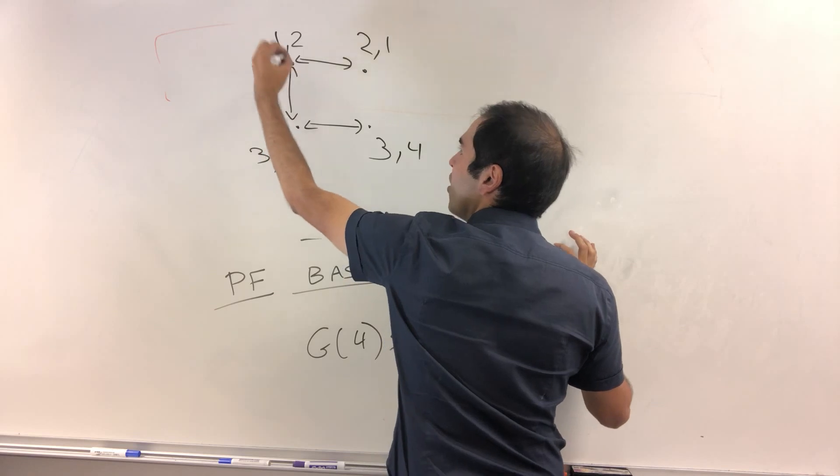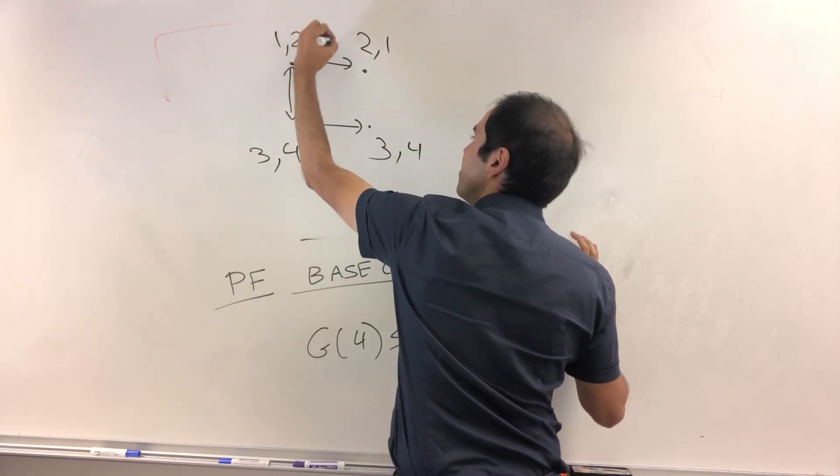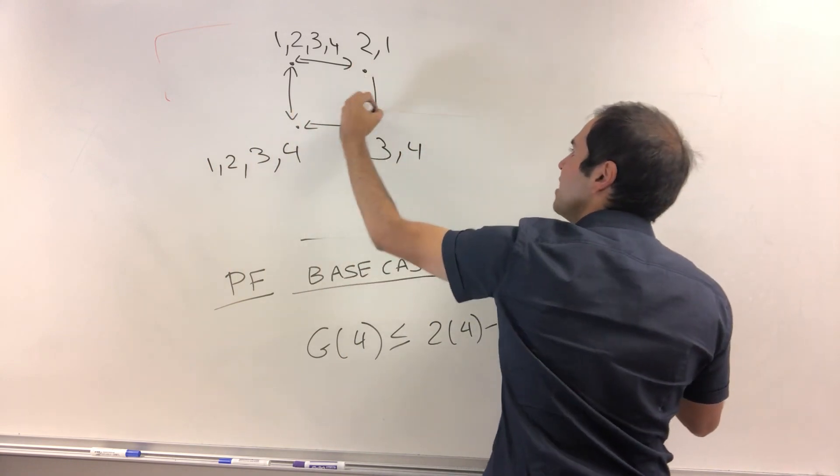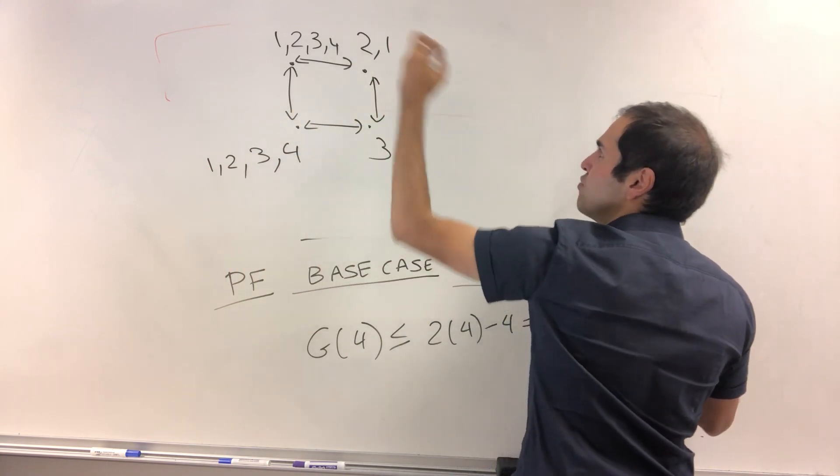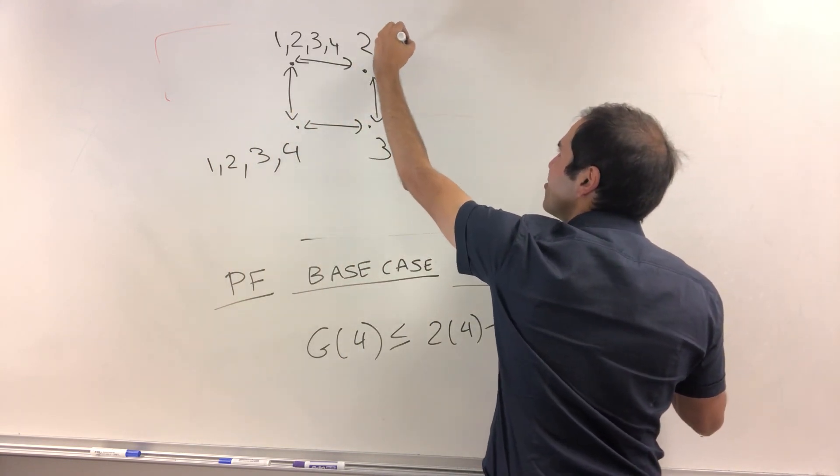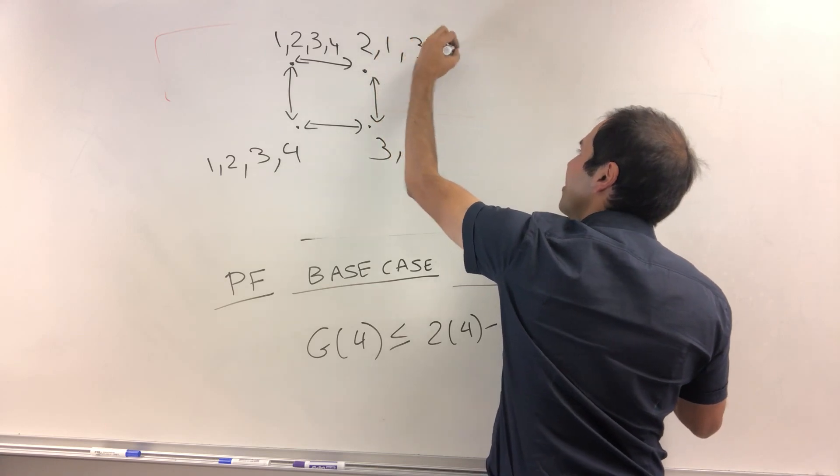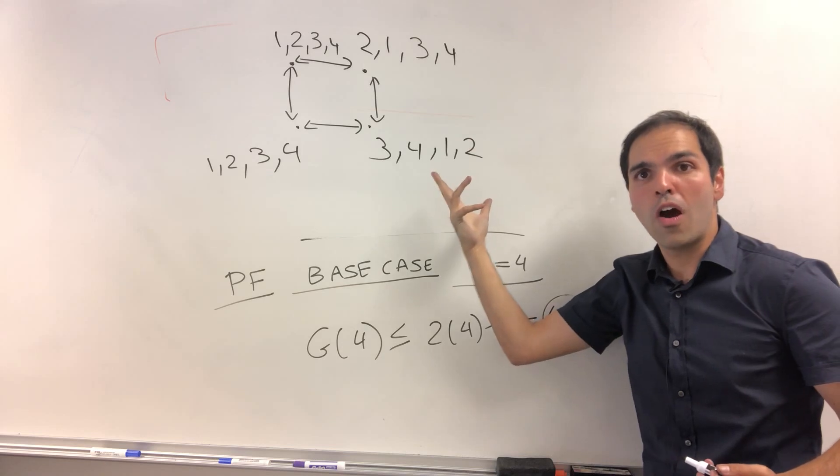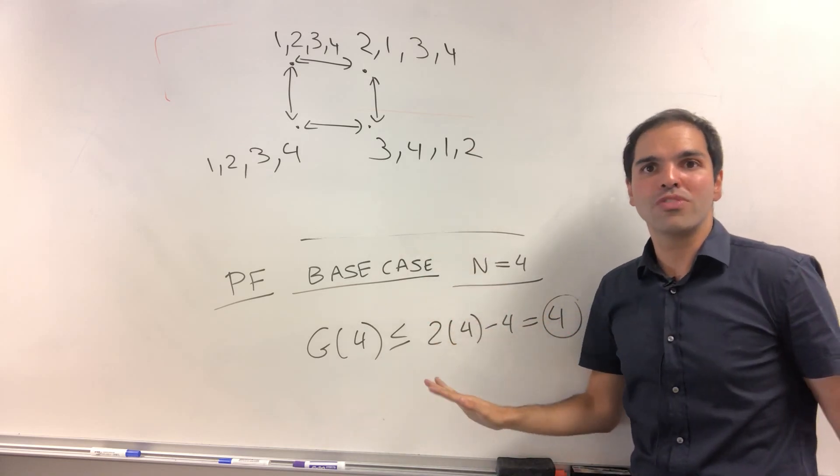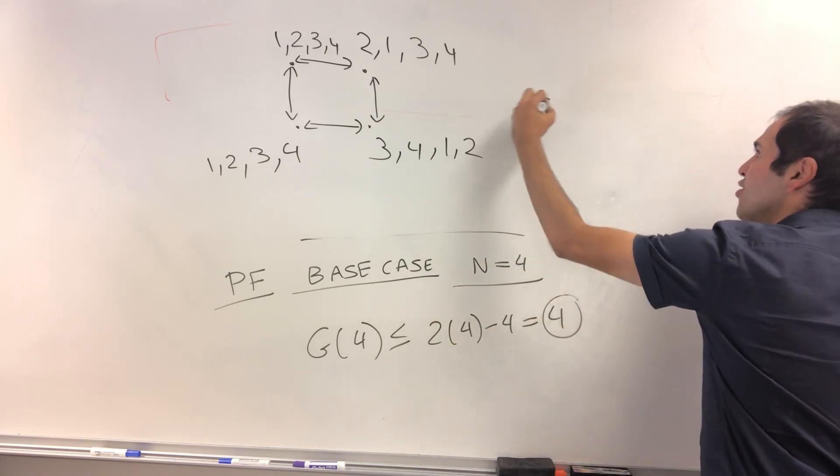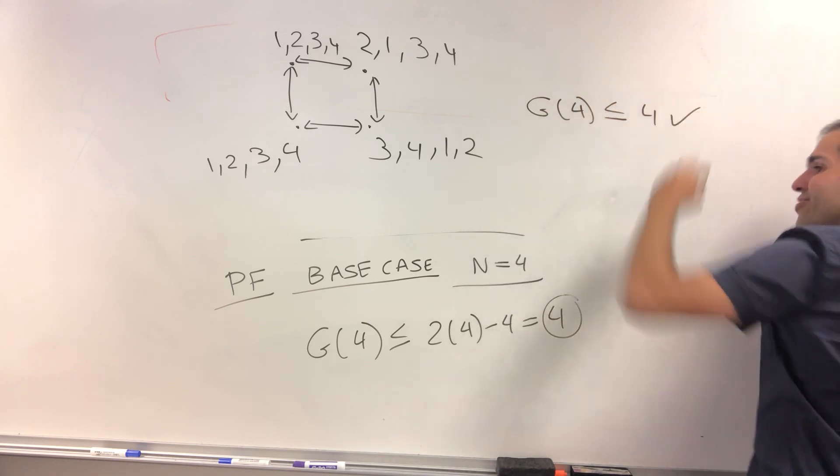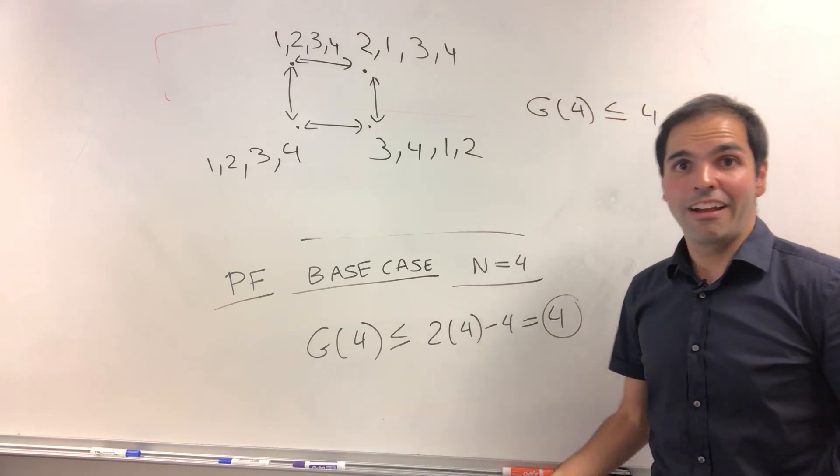Third call, one calls three, so one knows everything and three knows everything. And then lastly, two calls four, yeah, two calls three or four, so two, one, three, four and then three, four, one, two. So in fact, with four calls, we found that everyone knows their gossips. So g of four is less than or equal to four, which is what we want to show. Alright, inductive step.